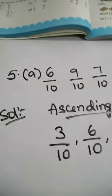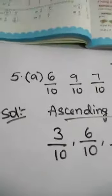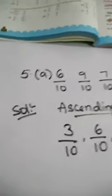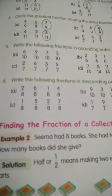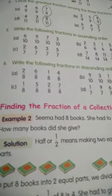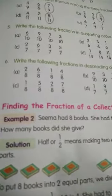Similarly, you just write the remaining one. I am doing the 6th bit — write the following fractions in descending order. First question: 2 by 8, 6 by 8, 1 by 8, and 4 by 8.